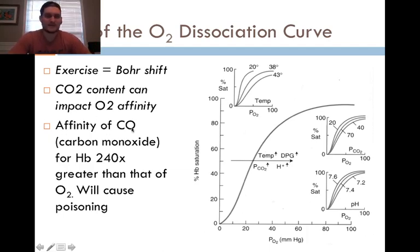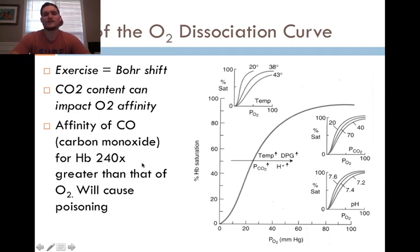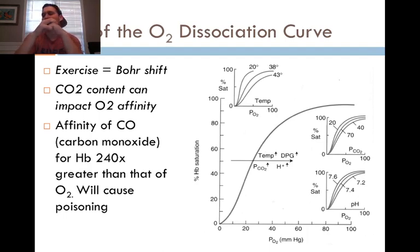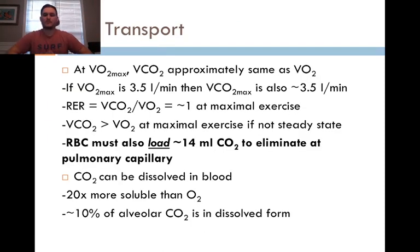It's worth noting that carbon monoxide has an affinity for hemoglobin approximately 240 times greater than O2. That's why we're always on the lookout for carbon monoxide poisoning — since carbon monoxide binds so strongly to red blood cells and won't let go, it blocks oxygen from binding, which is the mechanism behind carbon monoxide poisoning.